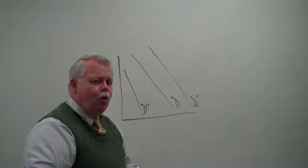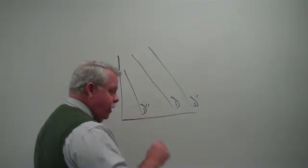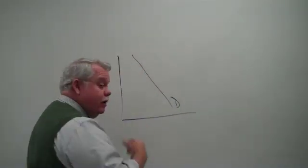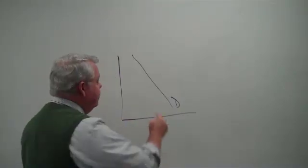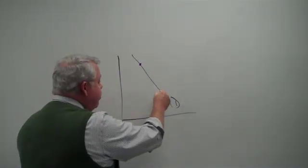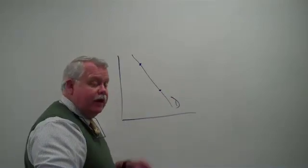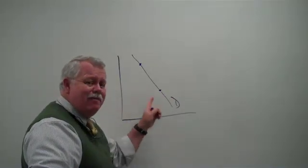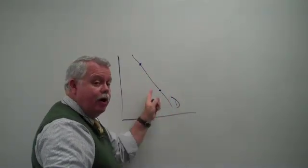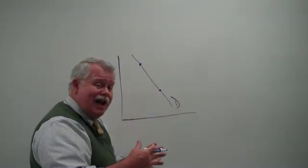What about quantity demanded? Well, now we're talking about on a demand curve, when you go from one point on that curve to another point on that curve, that's a change in the quantity demanded. Demand didn't change. The demand curve didn't shift. This is a change in quantity demanded.